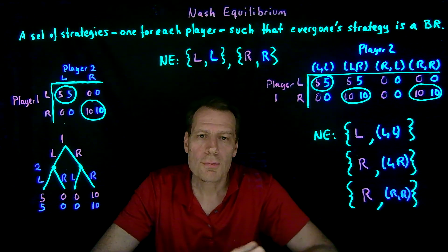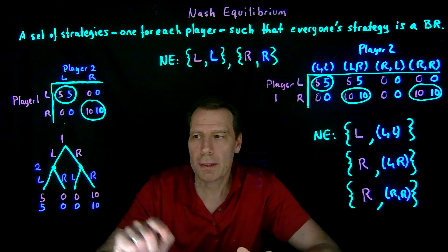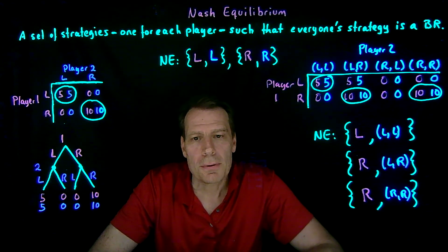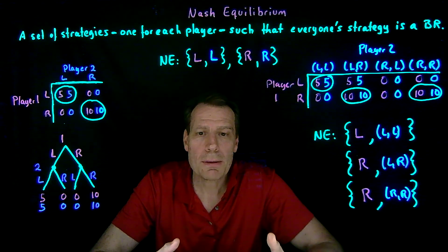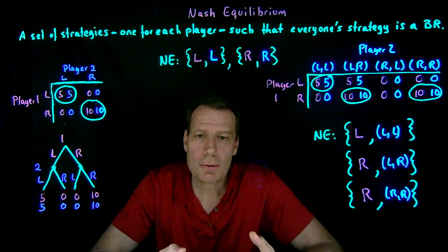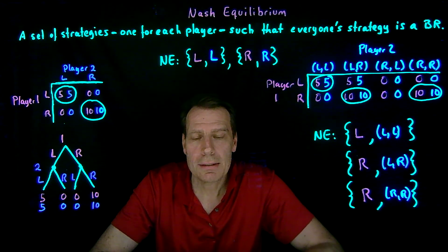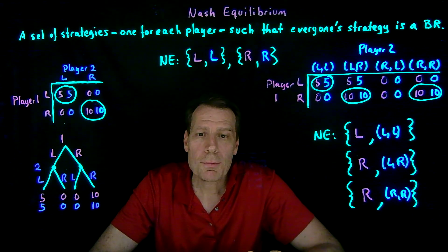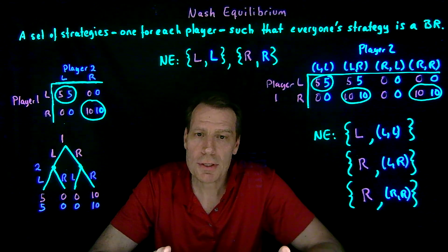So we've found three pure strategy Nash equilibria to this sequential game, equivalent to the game represented in the game tree. A Nash equilibrium is an equilibrium where everybody is doing the best they can given their circumstances — what other people are planning to do. When everybody's plans are such that no one wants to change given what everybody else is planning, we're at a Nash equilibrium.